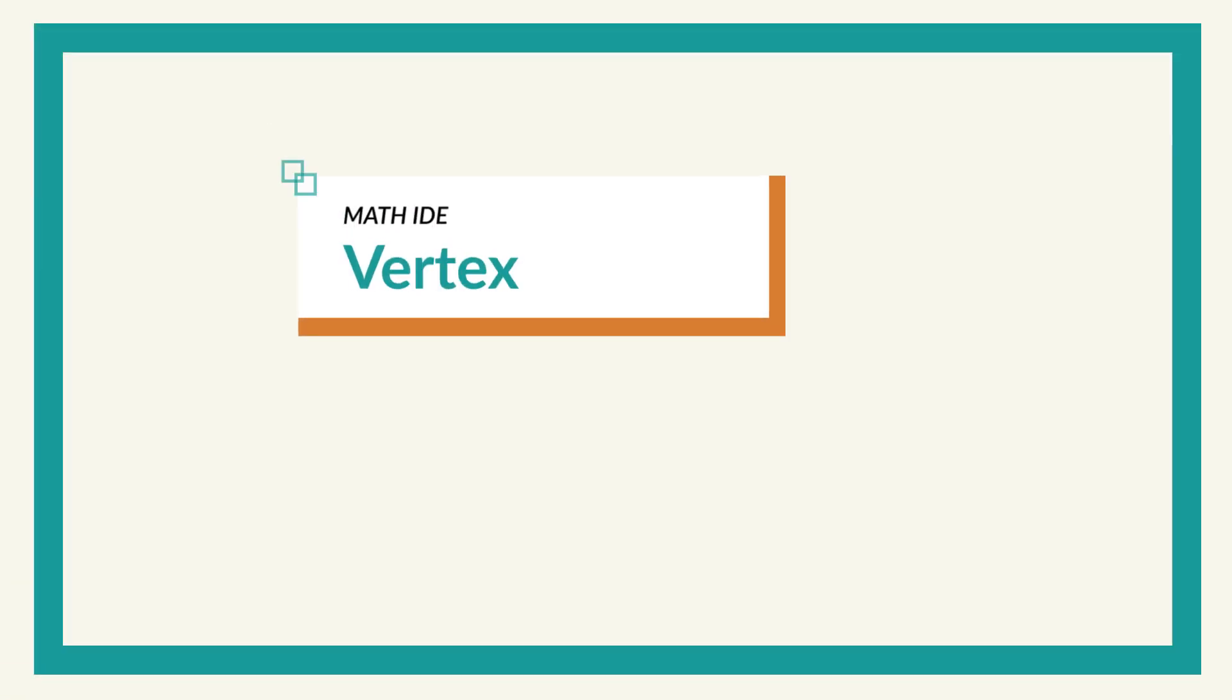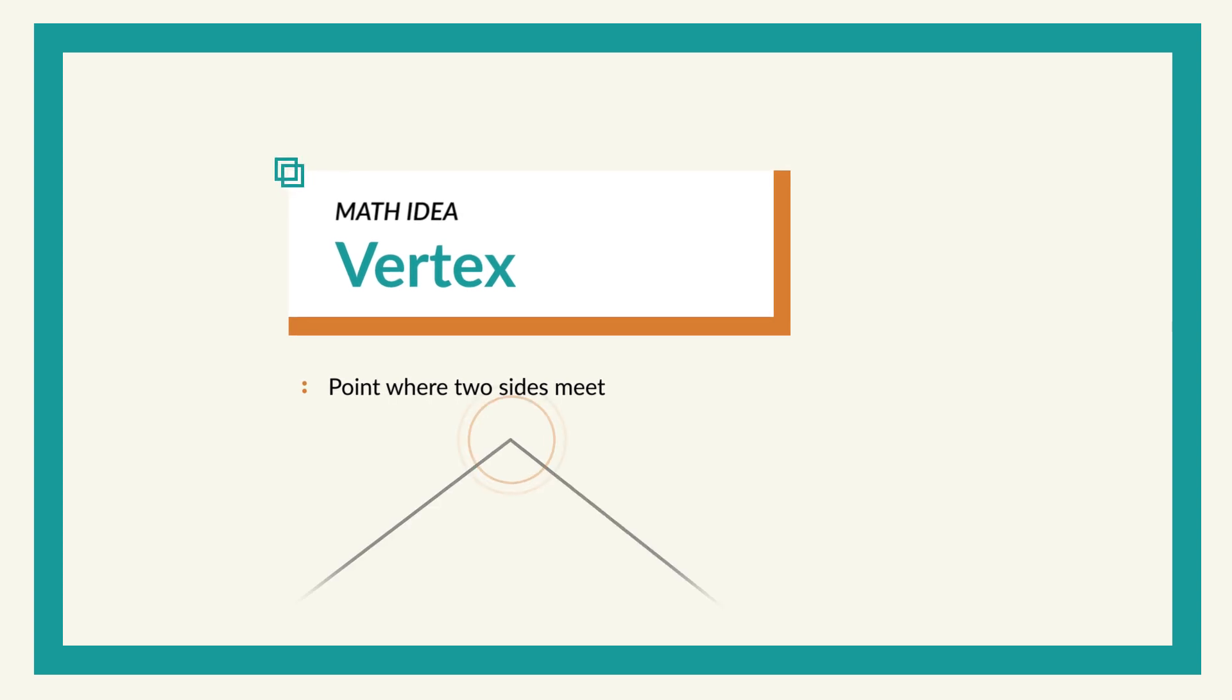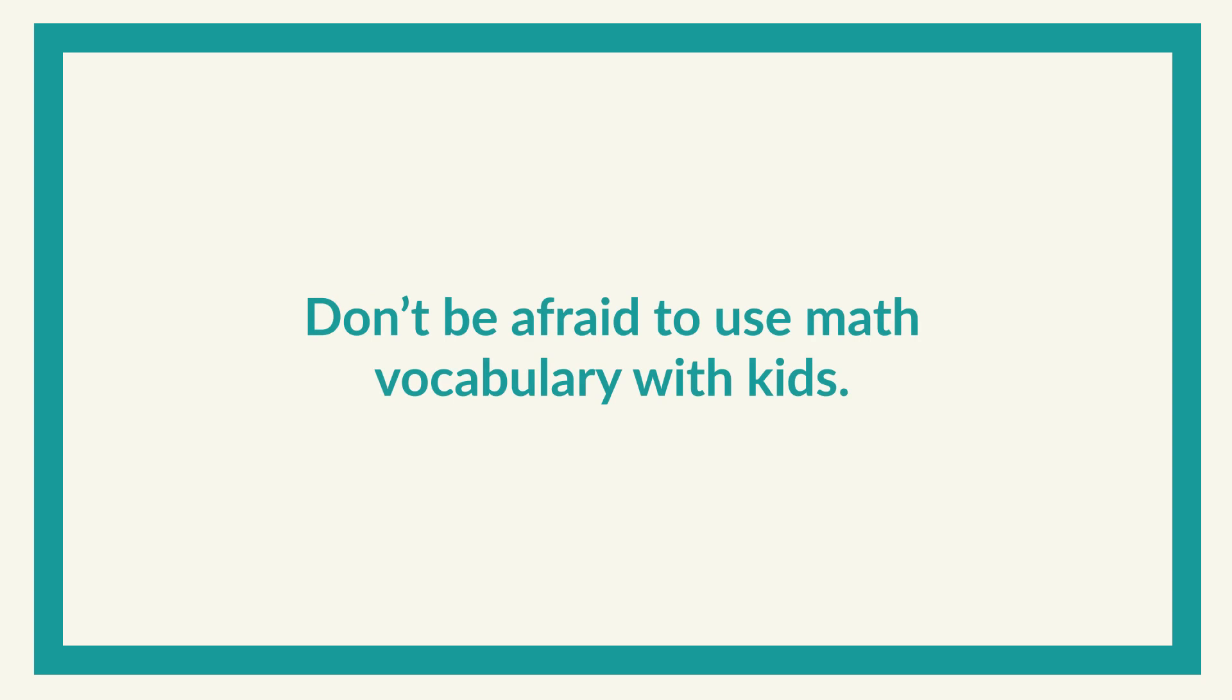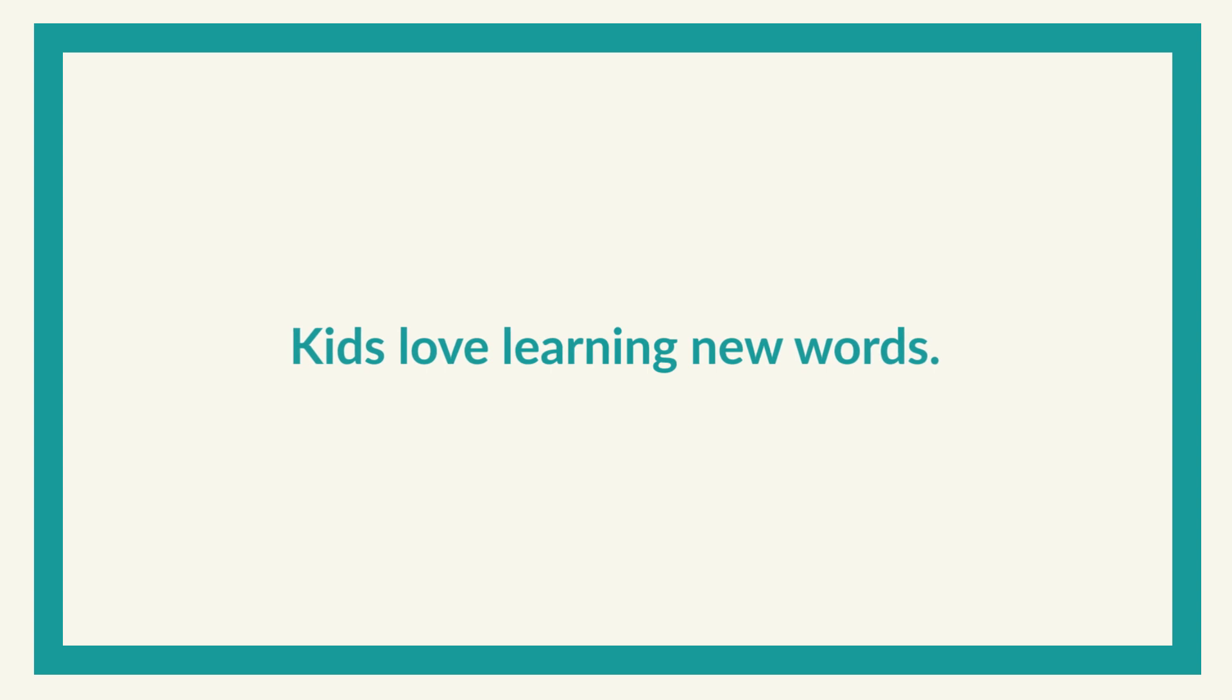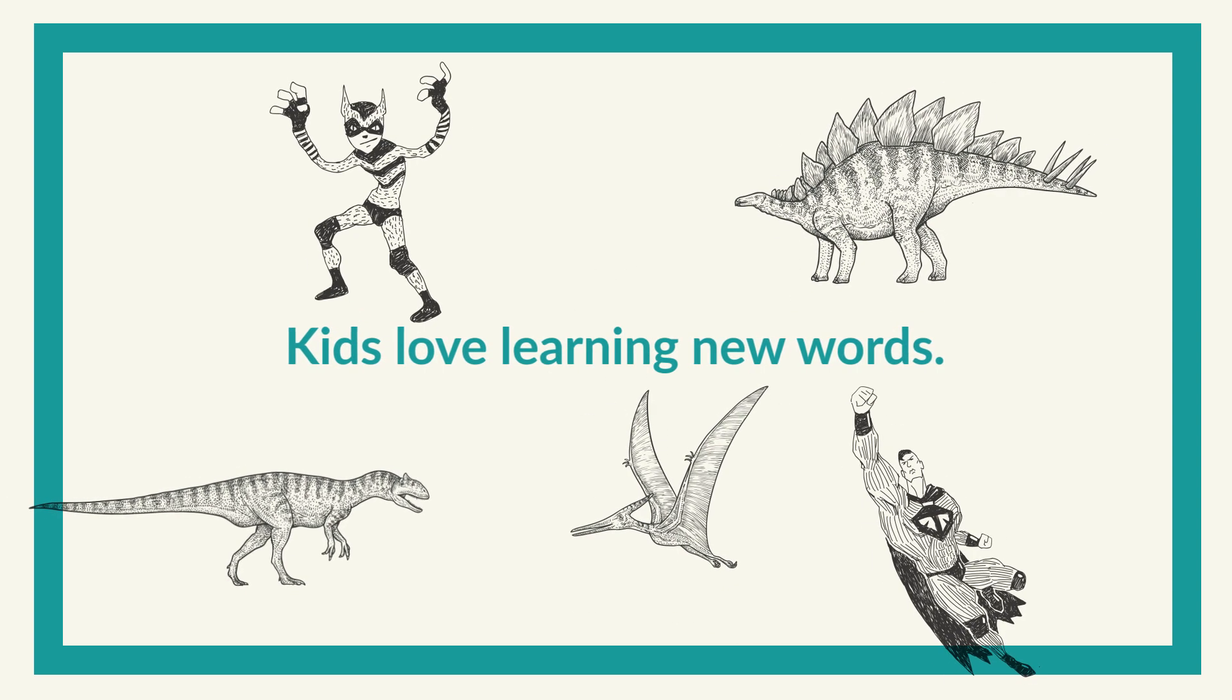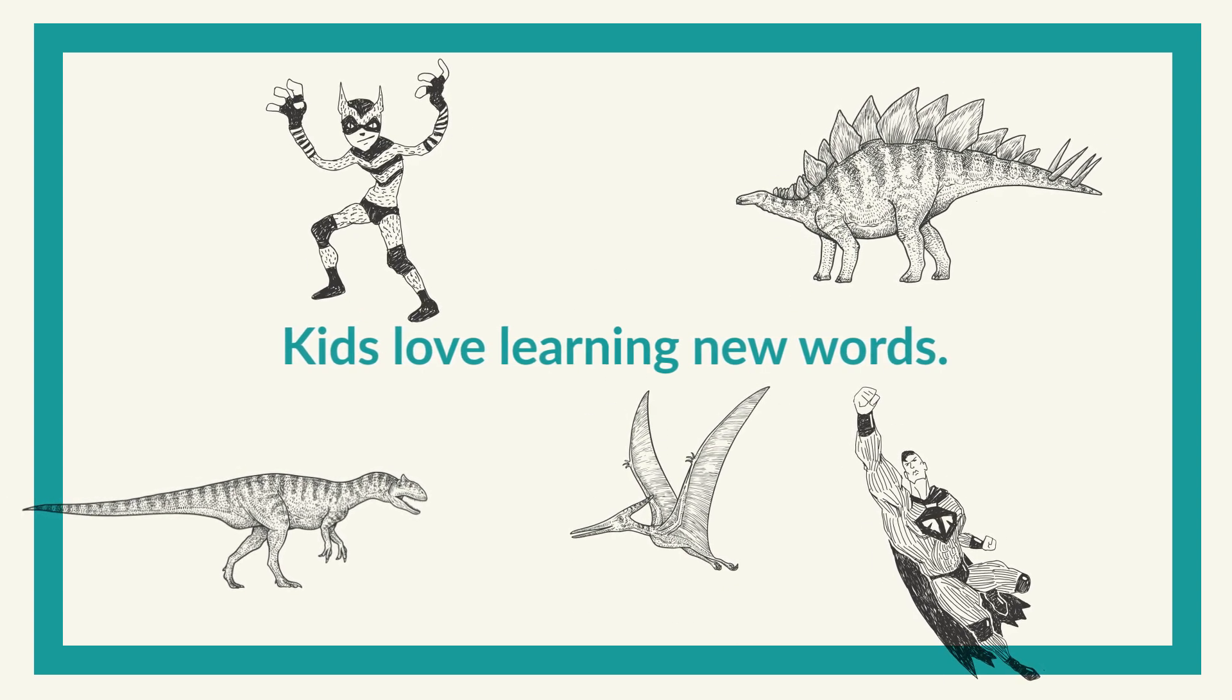A vertex is the mathematical term for where two sides meet, what you might normally call a corner of the shape. And don't be afraid to use math vocabulary like vertex and its plural, vertices, with kids. Kids love learning new words. And just like they can learn the names of dinosaurs and superheroes, they can learn math terms too.